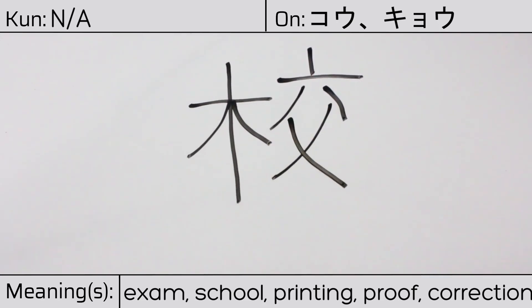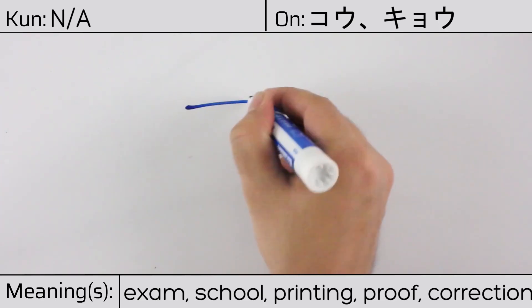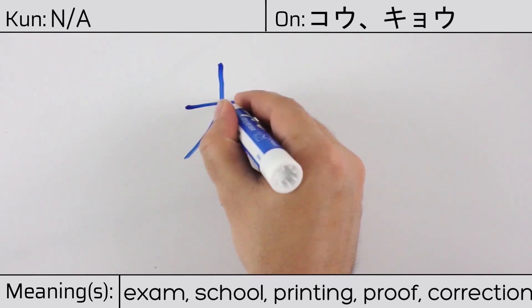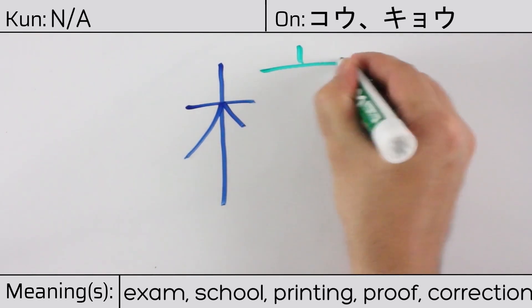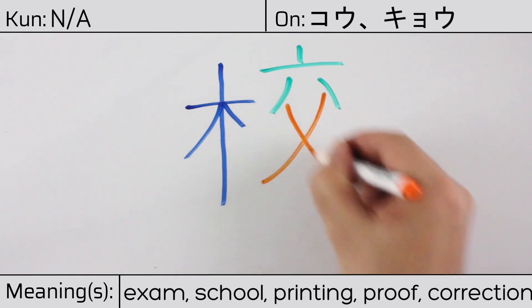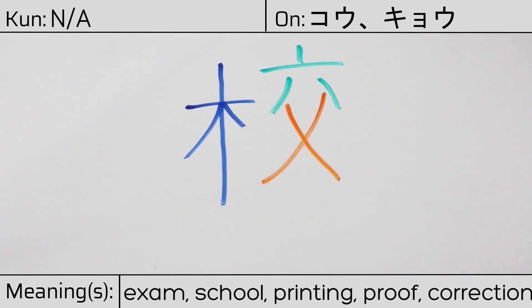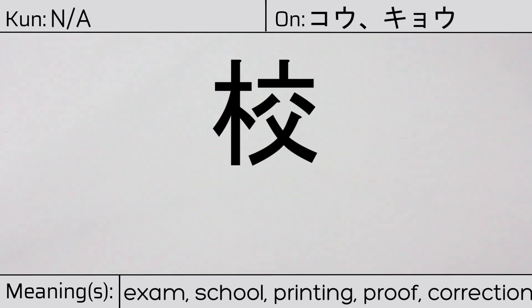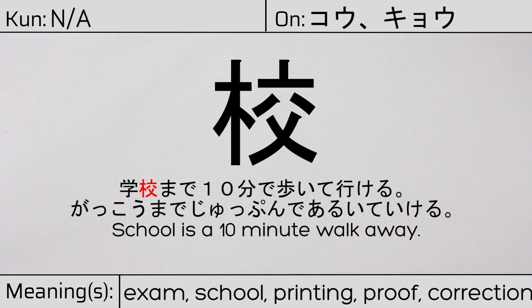This character is made up of the following radicals or parts: kanji tree ki, the lid or top radical nabebuta, and kanji chichi or father. You can remember this kanji by the following hint: a big tree in the village center where people interact and where children attend school. Our example sentence is: 学校まで10分で歩いていける — School is a 10 minute walk away.